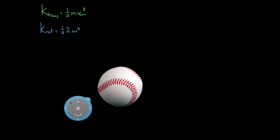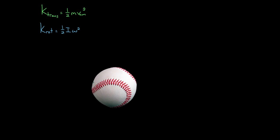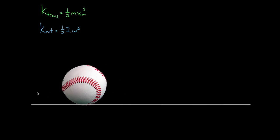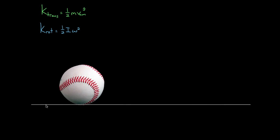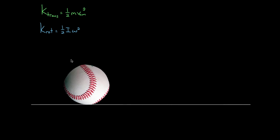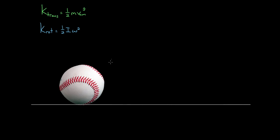This comes up in the following case. Instead of pitching a baseball, imagine we roll the baseball across the concrete. It's going to rotate as it moves forward, and so it's going to do something we call rolling without slipping. At least, that's what this baseball is most likely going to do.